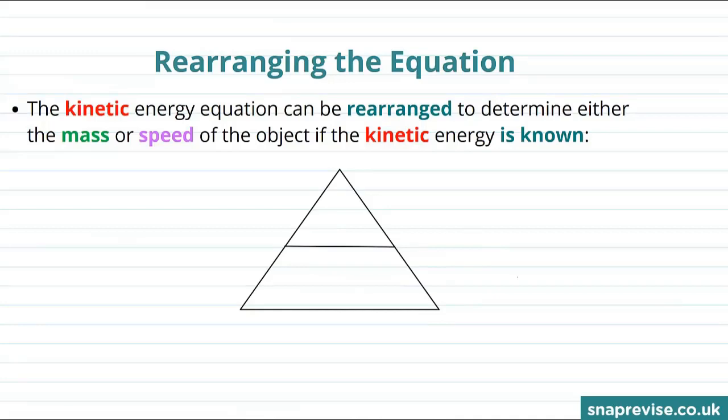Now let's learn how to rearrange the kinetic energy equation. Using a formula triangle, the kinetic energy equation can be rearranged to determine either the mass or speed of the object if we know the kinetic energy.